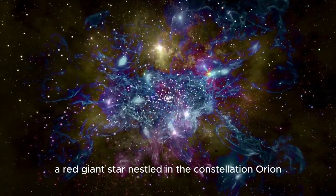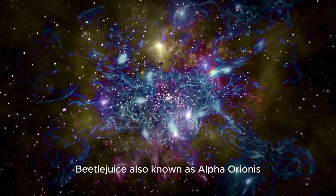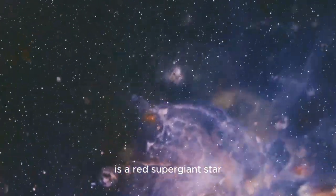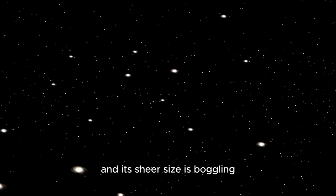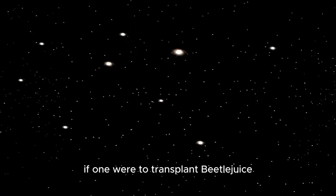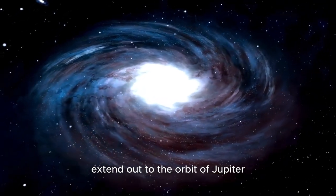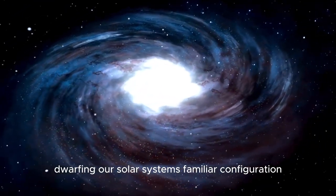A red giant star nestled in the constellation Orion, Betelgeuse, also known as Alpha Orionis, is a red supergiant star, and its sheer size is boggling. If one were to transplant Betelgeuse into the position of our sun, its expansive reach would extend out to the orbit of Jupiter, dwarfing our solar system's familiar configuration.